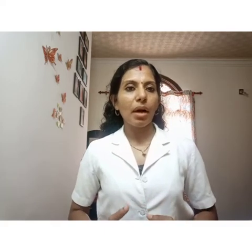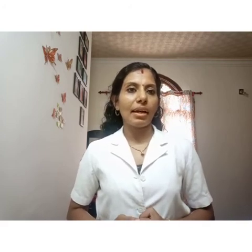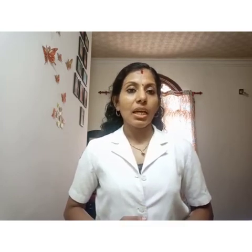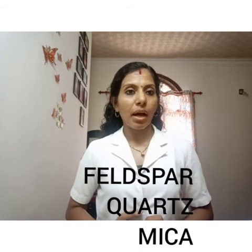Granite is formed when magma cools slowly under the earth's crust. Deep inside the earth's crust, rocks melt due to high temperature. This molten material is known as magma. Sometimes this magma does not come to the surface of the earth; instead, it slowly cools under the earth's crust. Such rocks are called granite. Granite is very hard and has large grains. It is made up of three minerals mainly: feldspar, quartz, and mica.